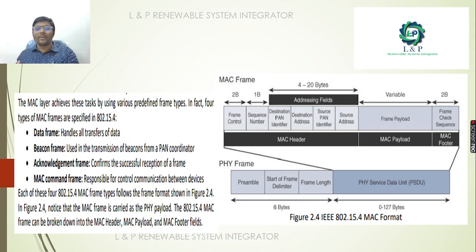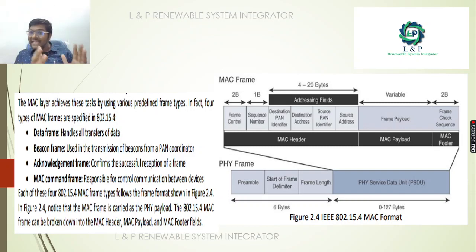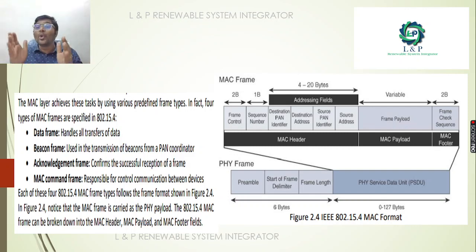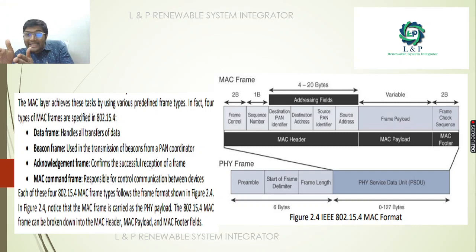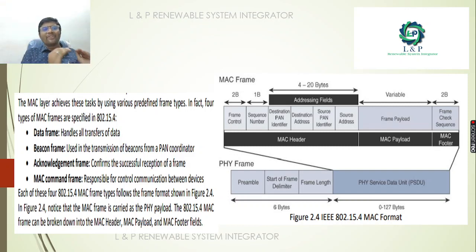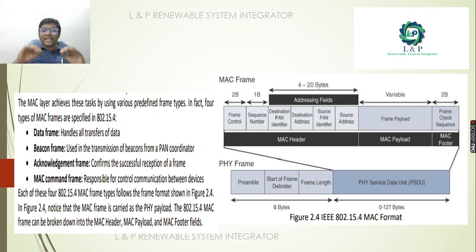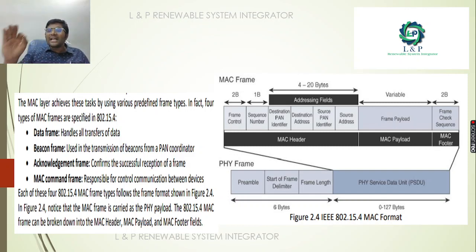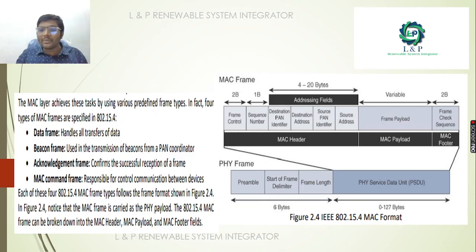For the MAC format, we have a MAC header, MAC payload, and MAC footer. The MAC header consumes around 2 bytes, 1 byte, and 4 to 20 bytes, with different addressing fields. The MAC payload is variable, and the MAC footer is 2 bytes. The data frame handles the transfer of data. The beacon frame is used for transmission of beacons from a PAN coordinator. The acknowledgement frame confirms successful reception of a frame. The MAC command frame is responsible for controlling communication between devices.